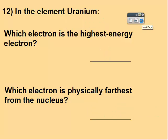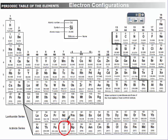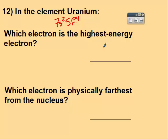So I'm going to pause the video and write your shorthand configuration and answer the two questions. Uranium is here, so we need to use radon. And then 7s2, 5f4. So my highest energy is the 5f, and farthest from the nucleus is 7s.